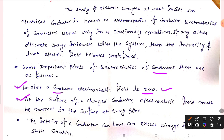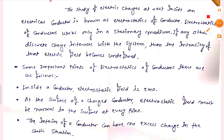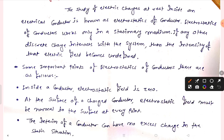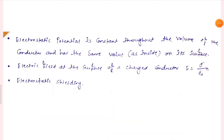Second: at the surface of a charged conductor, the electrostatic field must be normal to the surface at any point. Third: the interior of a conductor can have no excess charge in the static situation.